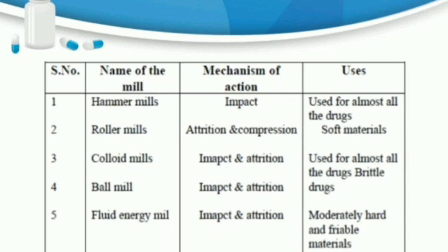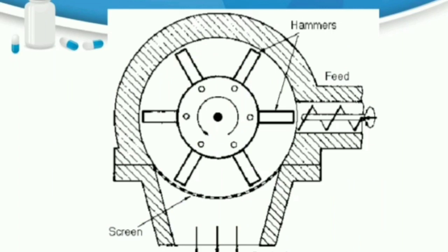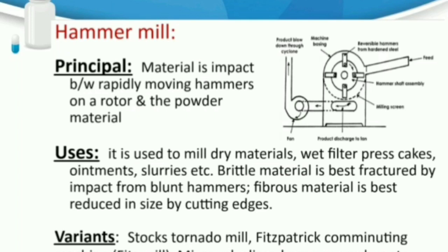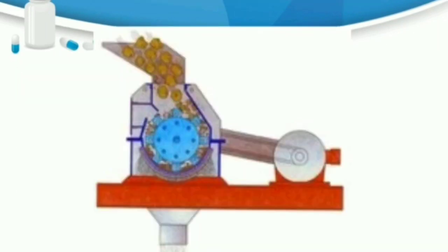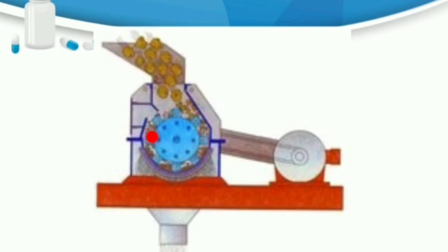The hammer mill's principle, construction, and working are as follows. The mill consists of a hopper and a milling chamber in which a shaft is placed — the shaft is either vertical or horizontally oriented. The blue-colored components shown are hammers, which are mounted on the shaft. At the bottom of the mill, a screen is attached.